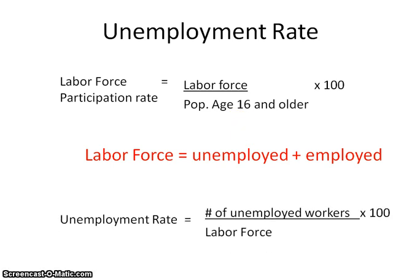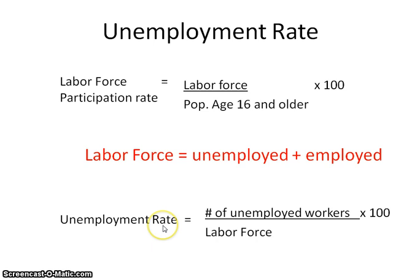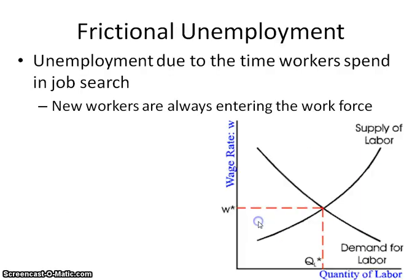The unemployment rate includes those that are looking for a job and can't find one, out of those that have the ability to be able to get a job — that's what we have here as the number that qualifies to be part of the labor force. When you're calculating the unemployment rate, you're looking at those who are actively seeking a job out of those that have the ability to get a job.